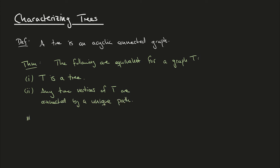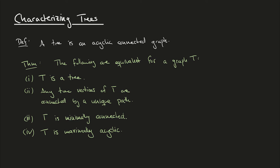The third point states that T is minimally connected. This means that T itself is connected, but if we remove any edge in T, then it becomes disconnected. The fourth point is similar, saying that T is maximally acyclic. This means that T is an acyclic graph, but if we add any edge into T, then T becomes cyclic.